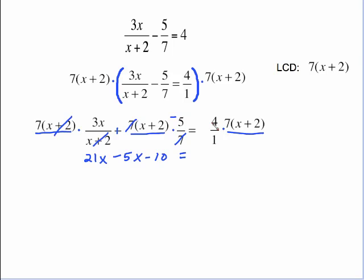Over here nothing cancels. I need to do 4 times 7 times the binomial. It's going to be easiest if we do that order. 4 times 7 is 28 and then distribute the 28 times the x plus 2 which will give us 28x plus 56. At this point all of the fractions are gone. This is plain old Algebra 1 solving. Combine your like terms gives you 16x minus 10 equals 28x plus 56.